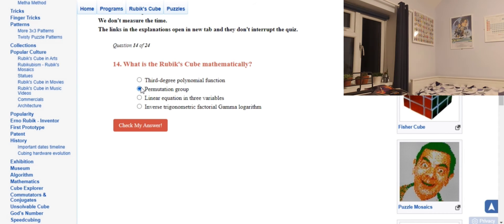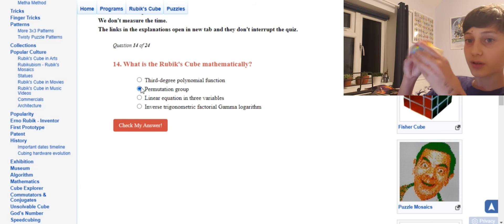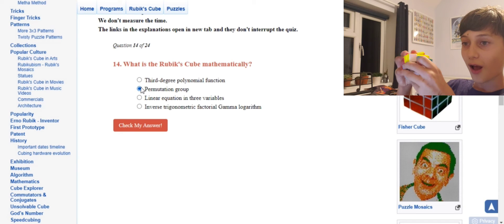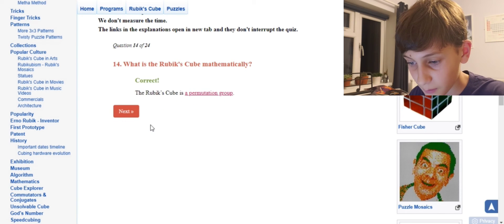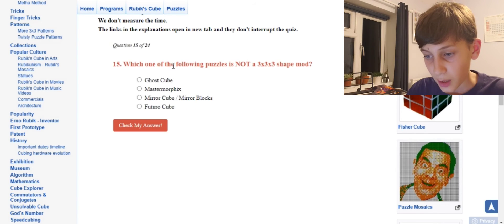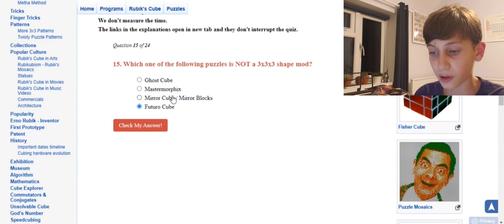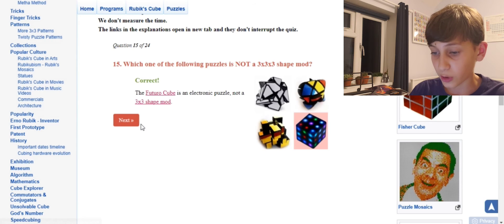Okay, what's the Rubik's Cube mathematically? That's a permutation group because J Perm, okay. Permutation, correct! Okay, which one of the following is not a 3x3 mod? That is a Futuro cube because mirror cube is, morphics is, and ghost cube is, so it must be the Futuro cube. Correct!